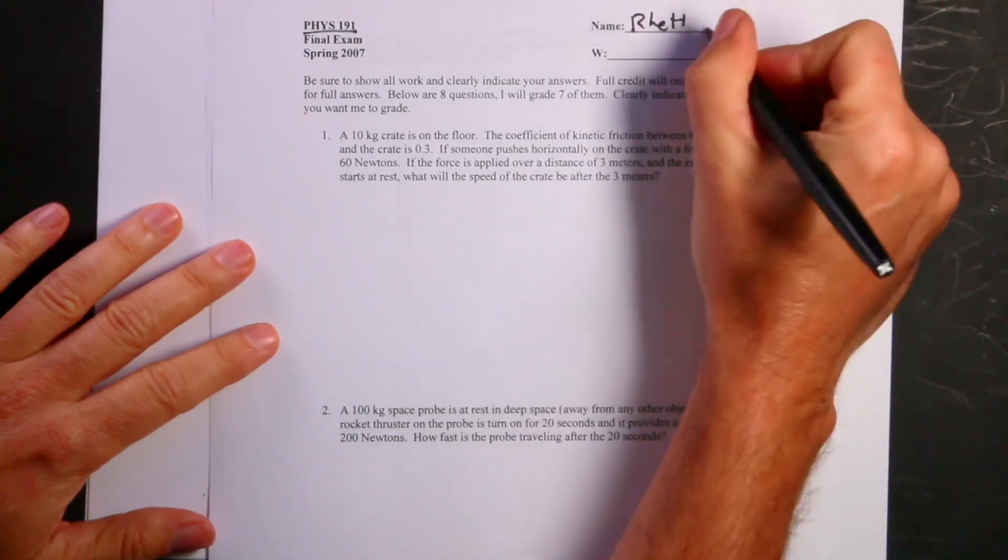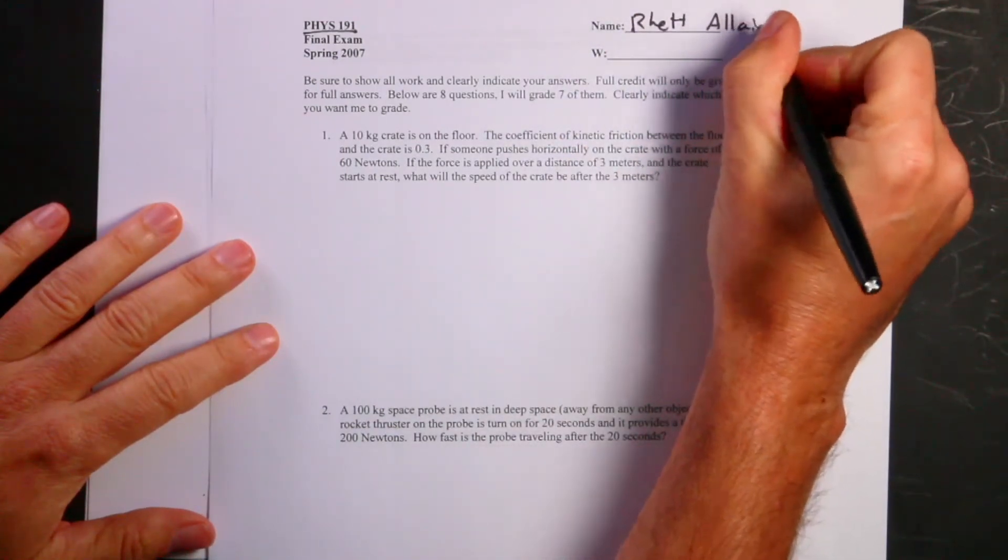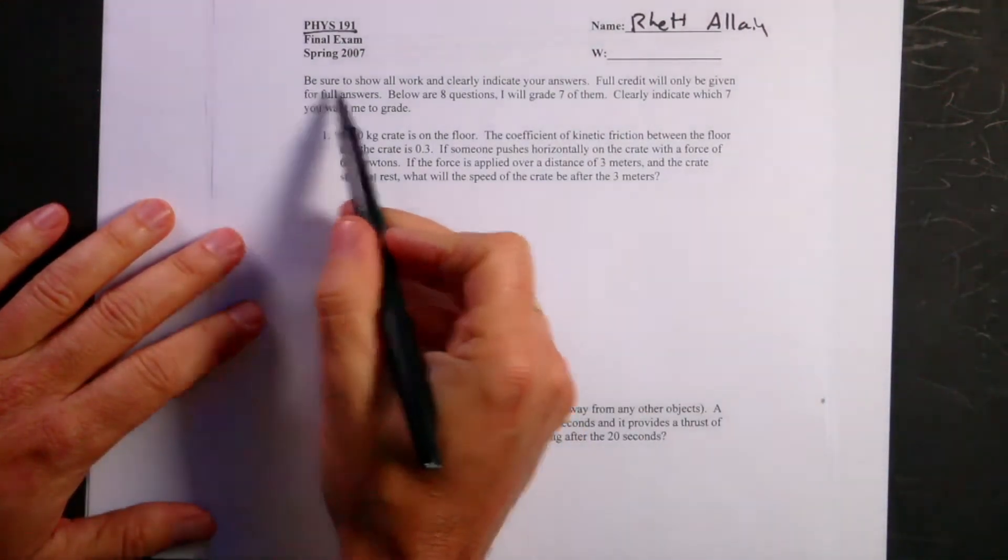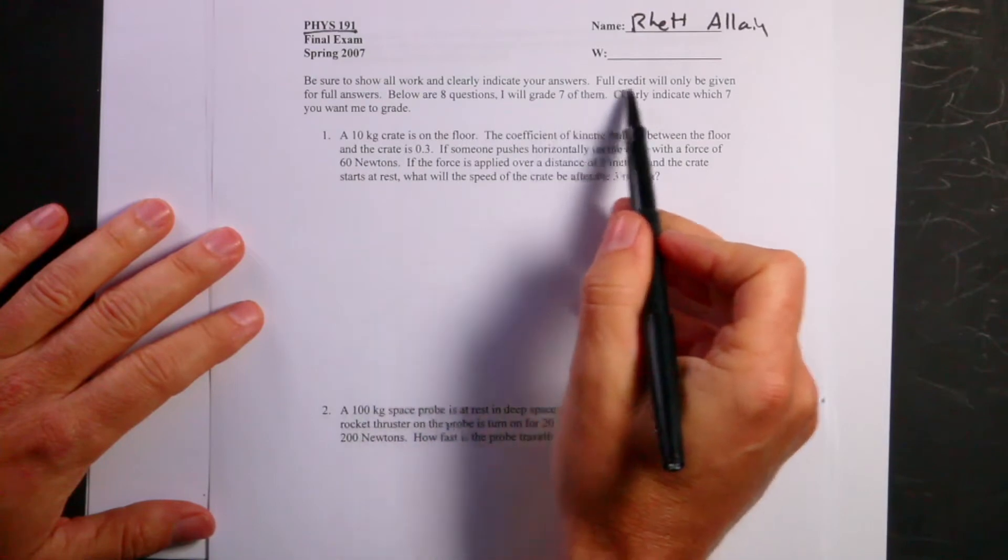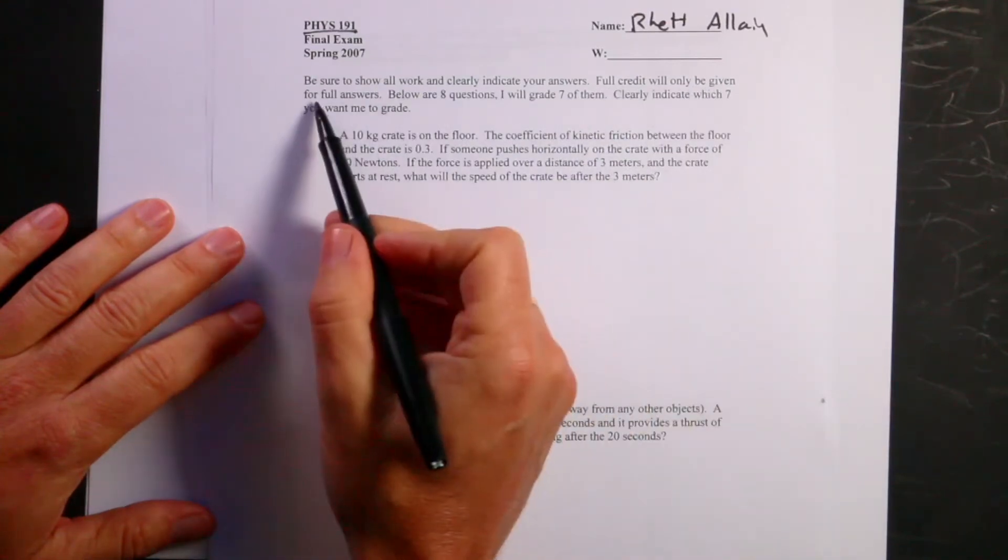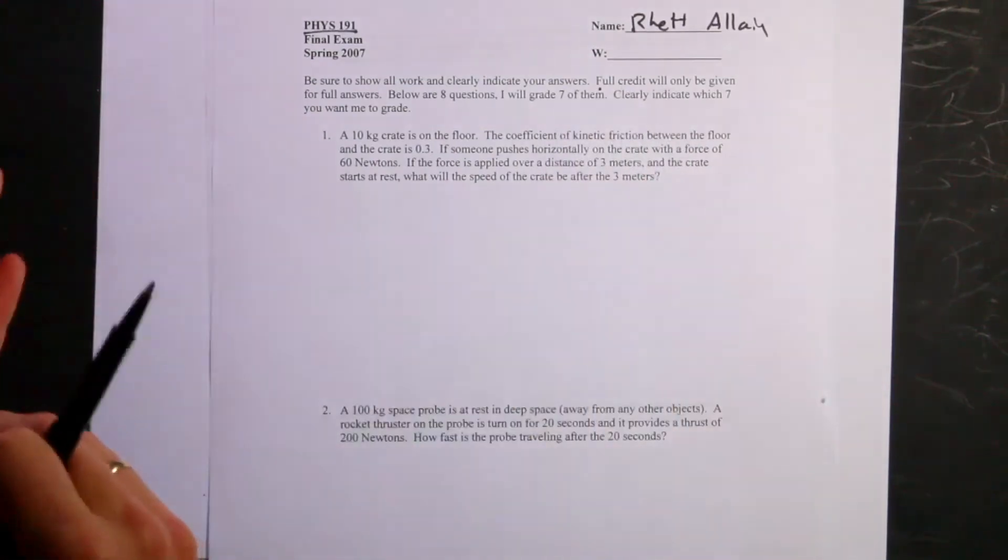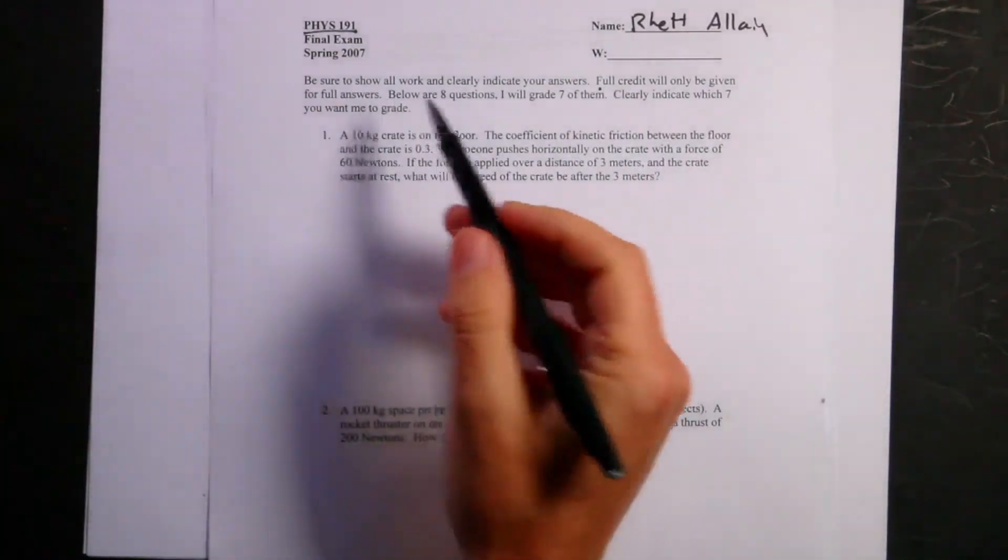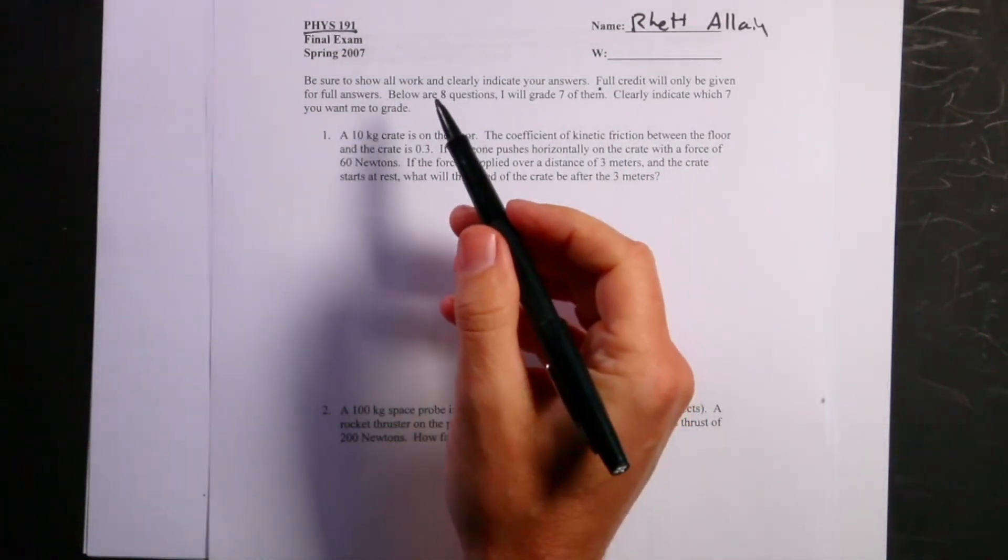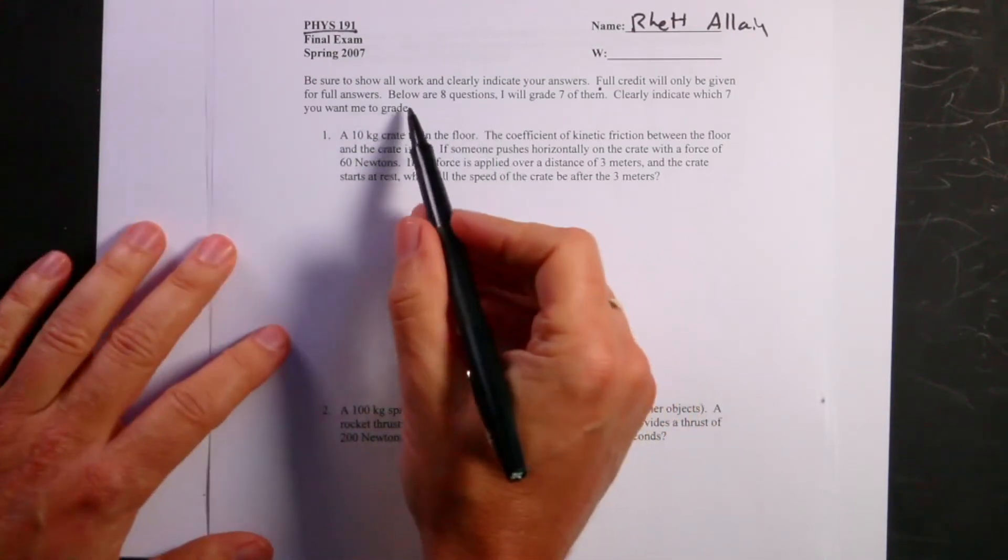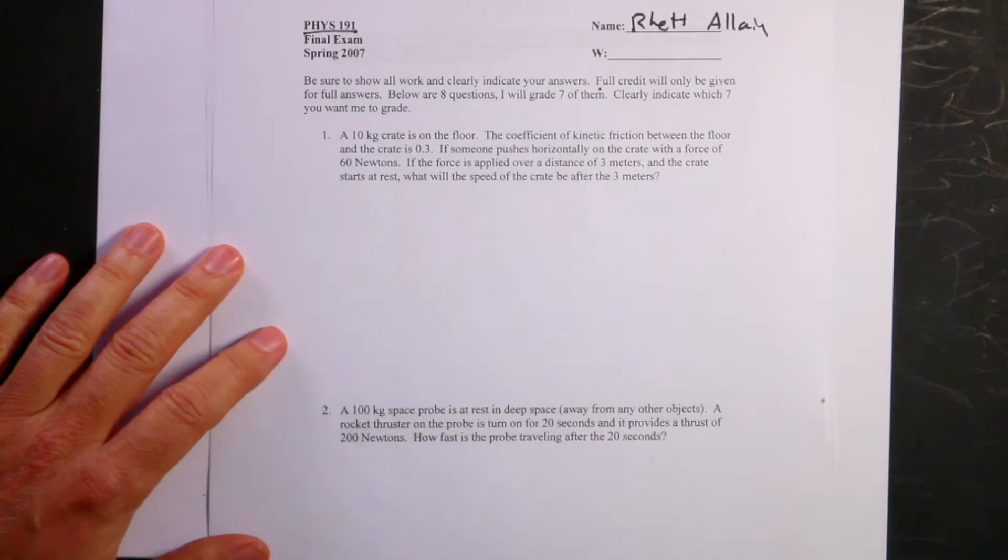Show all work and clearly indicate your answers. Full credit will only be given for full answers. I started doing that a long time ago. I thought that was something newer that I'd say, full credit for full answers, so 2007, that's 14 years ago. Eight questions, I will grade seven of them. This is the final exam.